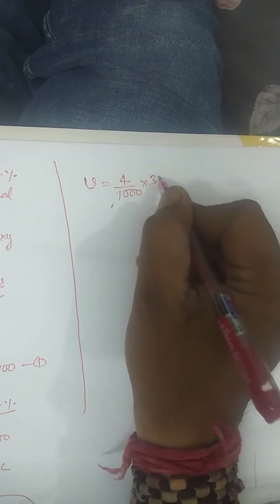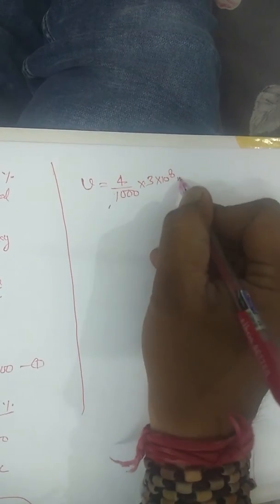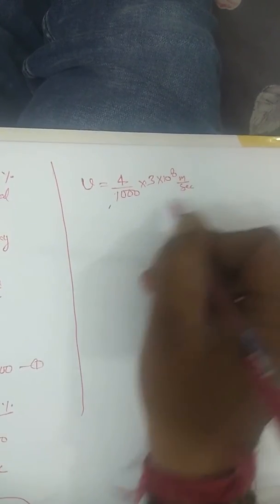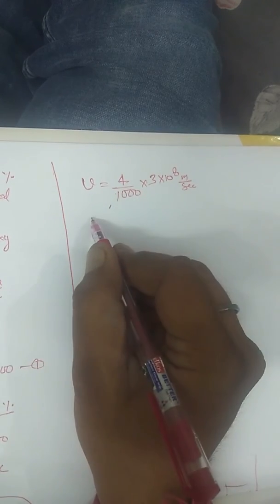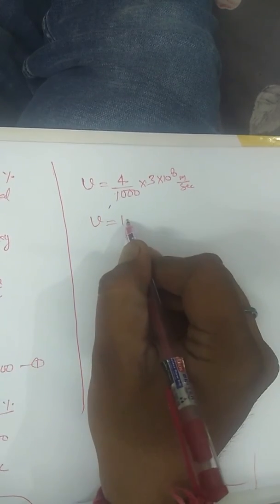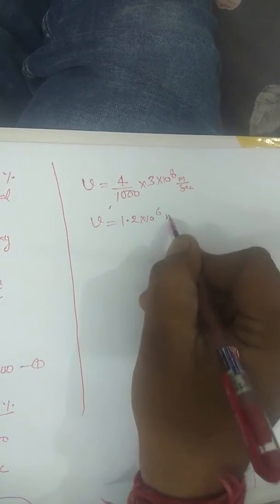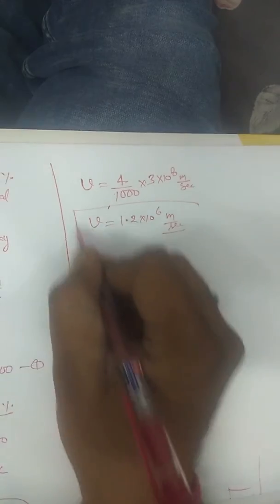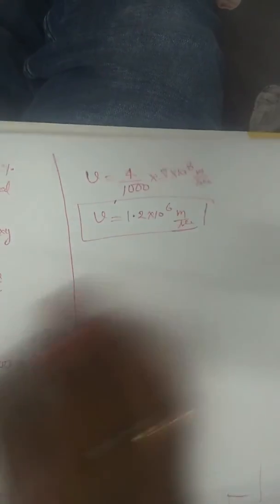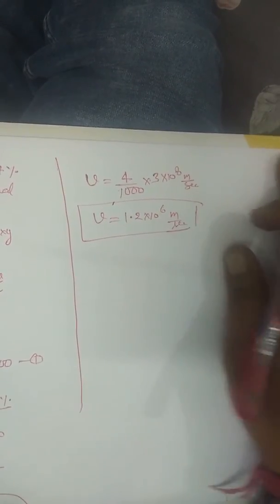C is speed of light which is 3 into 10 to the power 8 meters per second. So it will be v equals to 1.2 into 10 to the power 6 meters per second. So this is the velocity of galaxy with respect to the earth.